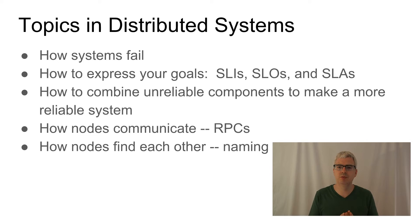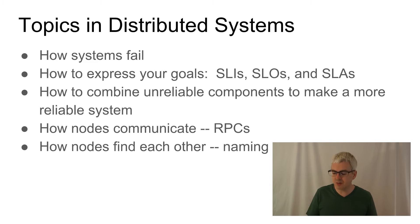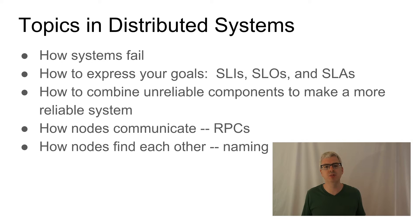The next topic is the architecture of distributed systems, which are often designed around combining unreliable components to make a more reliable system. Because there's an infinite number of ways you can combine components, there are some common patterns and paradigms that people have found which tend to work well for building a reliable system.